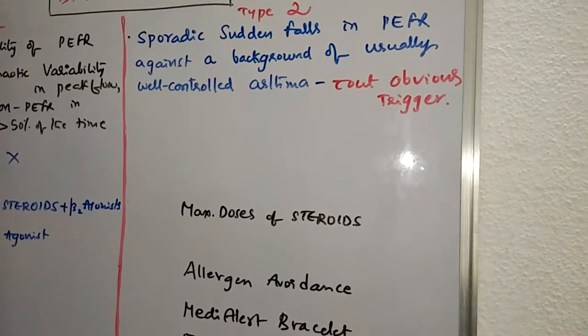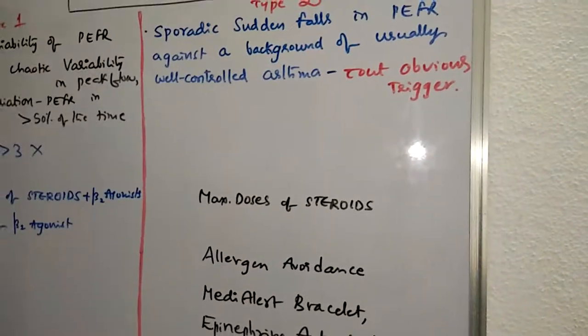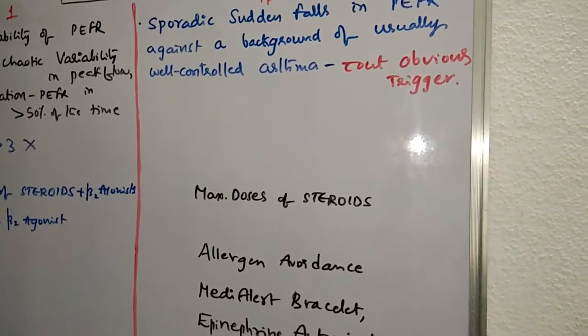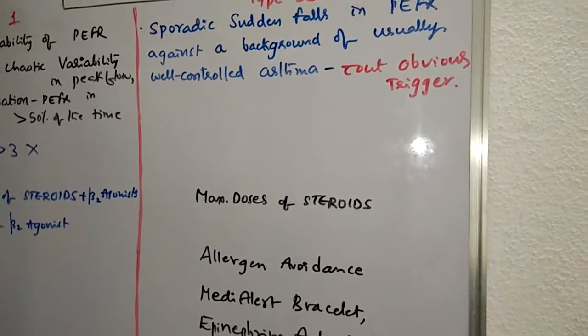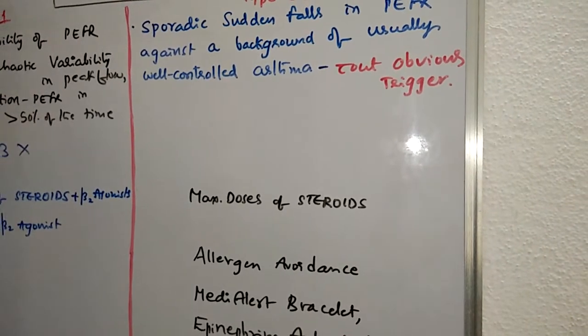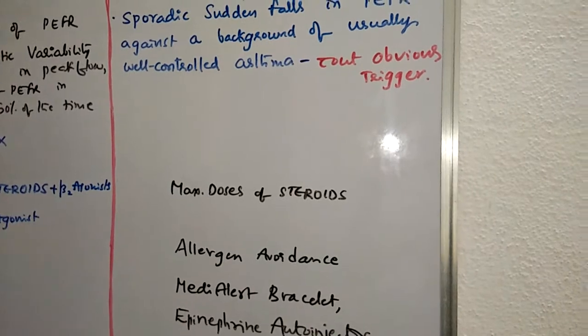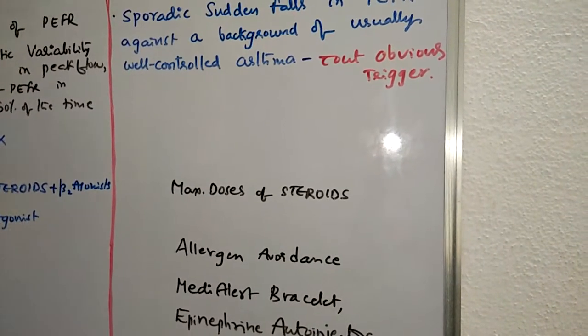In both types, patients are subjected to recurrent severe attacks. Individuals with type 1 suffer chronic attacks in spite of ongoing medical therapy, while those with type 2 experience sudden acute, even life-threatening attacks even though otherwise their asthma seems well managed.